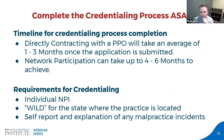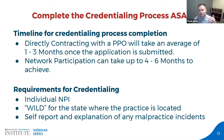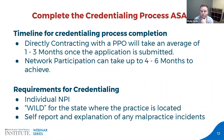When credentialing and adding associates, understand the credentialing timeframe. Directly credentialing with an insurance company typically takes an average of one to three months once the application has been sent — assuming it was sent to the correct place, they received it, and there were no problems. We keep a close pulse on turnaround times because we submit hundreds of applications a month, which allows us to give customers a more accurate ETA.